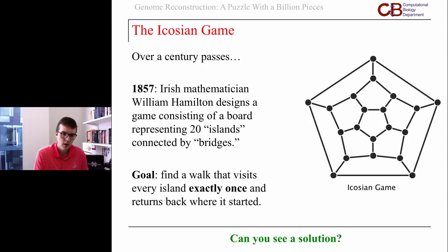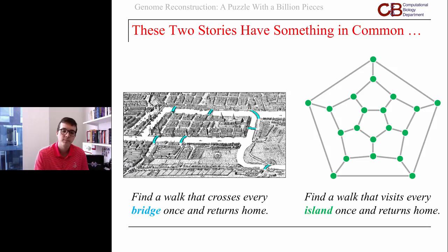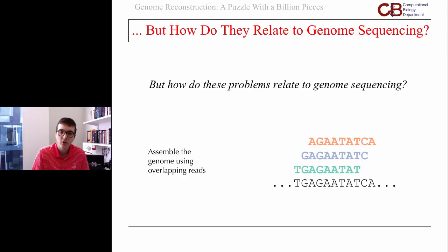Notice how similar these two problems are. In the Königsberg bridge problem, we want to find a walk that crosses every bridge exactly once and comes back to where we started. In Hamilton's Icosian game, we want to find a walk that touches every island exactly once and comes back to where we started. Of course, you're wondering what these problems have to do with genome sequencing, where we have a collection of reads we want to assemble based on overlap.